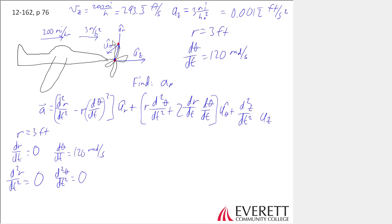So now I can just start plugging things in. Sometimes it's nice to just go cancel out all those zeros, right? This one would be zero. d theta/dt is not zero, so we'd keep that one there. Second derivative of theta is zero. dr/dt is zero, so this one cancels out completely. Now we just plug things in. a is going to be equal to negative r, which is three feet, times d theta/dt, which is 120 radians per second, whole thing squared times ur plus zero times u theta plus 0.0012 times uz.